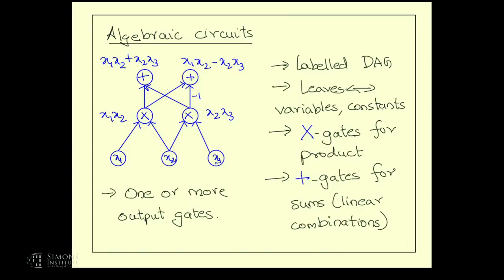So this is what an algebraic circuit does in general. For example, in the circuit shown here, the minus one along an edge indicates that the second plus gate computes x1 − x2 + x3 — it's computing a general linear combination of its inputs. The scalars giving you this linear combination appear along the edges that are input to the sum gate. The size of this circuit is eight because there are eight edges.